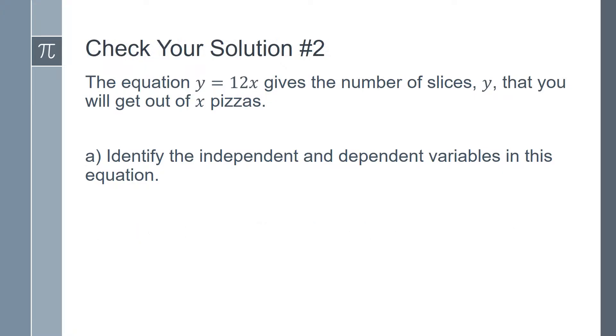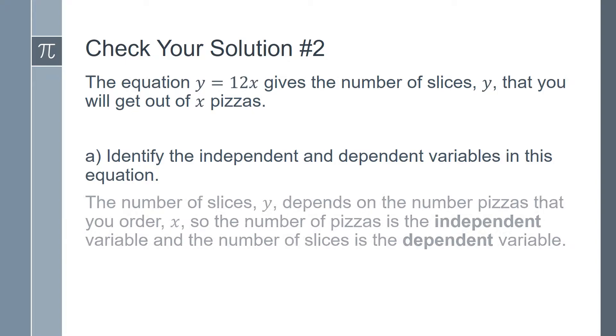So for part a we need to take a look at the independent and dependent variables of the equation. We know that the number of slices, which is y, depends on the number of pizzas that you order, which is x. So the number of pizzas is the independent variable, and the number of slices is the dependent variable.